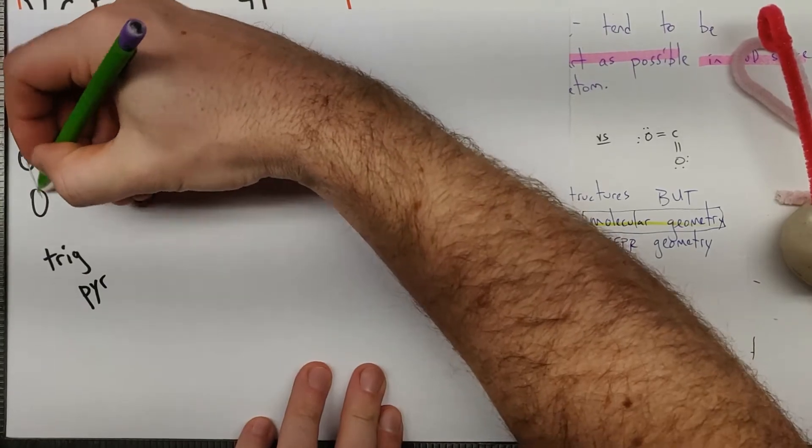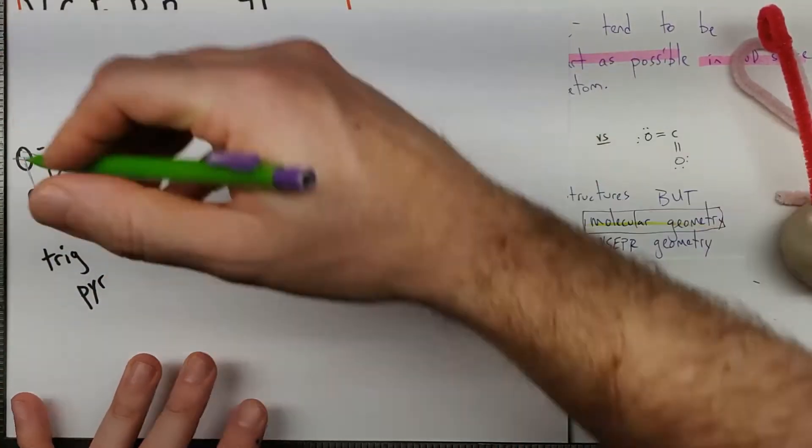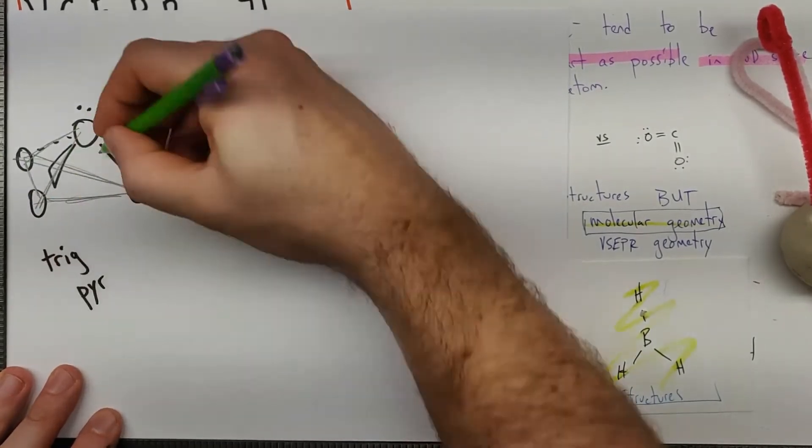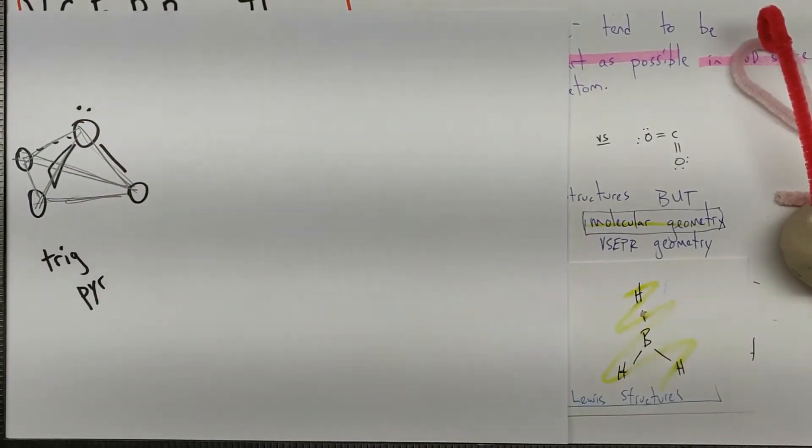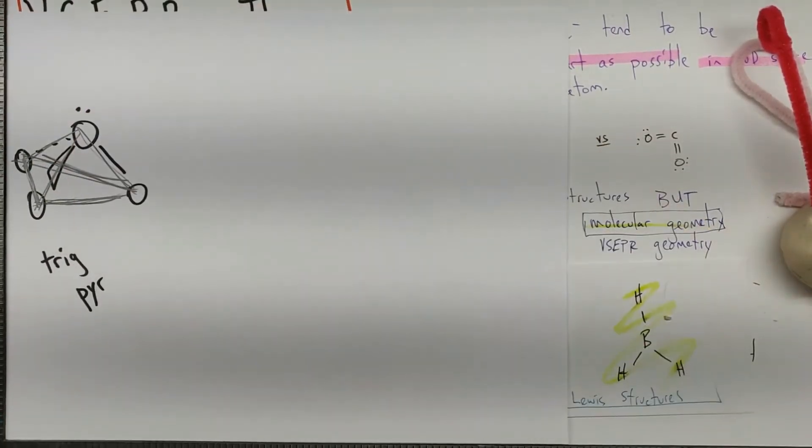And what it really is, is it's like you have a pyramid, right, a three-sided base pyramid. Somehow that looks worse, not going to lie. But it's like you have a three-sided base pyramid, all right?